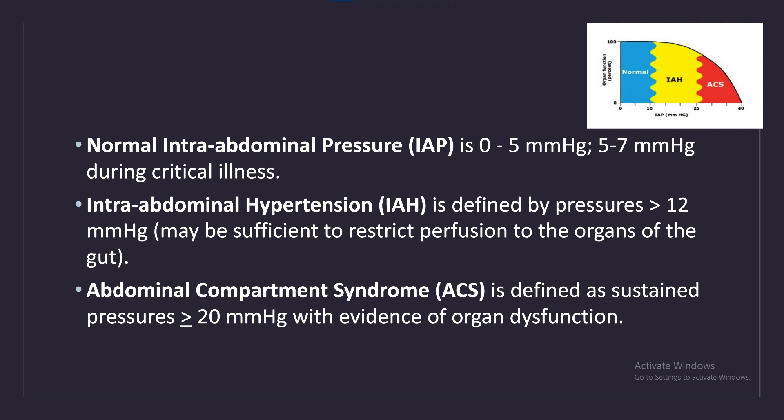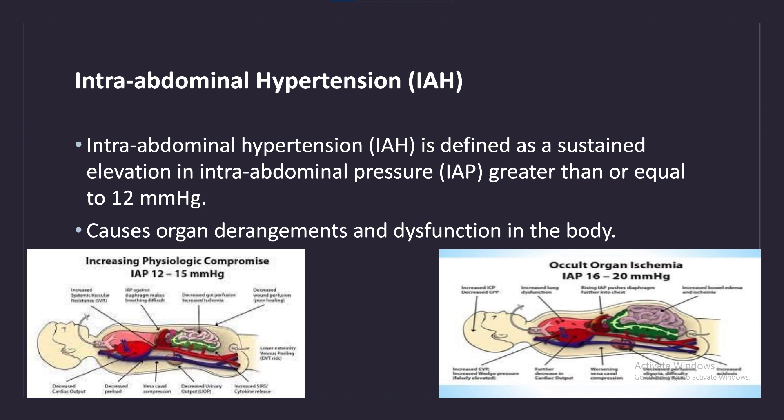Intra-abdominal hypertension (IAH) is defined by pressures greater than 12 mmHg, which may be sufficient to restrict perfusion to the organs of the gut. Abdominal compartment syndrome (ACS) is defined as sustained pressures greater than 20 mmHg with evidence of intra-abdominal hypertension.